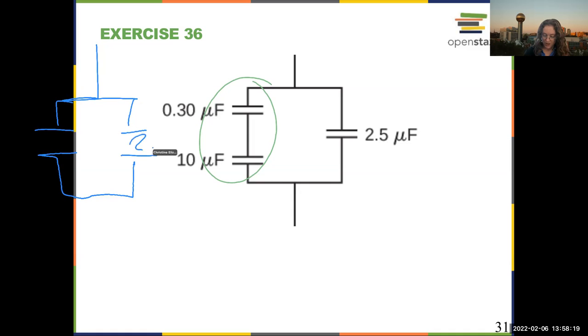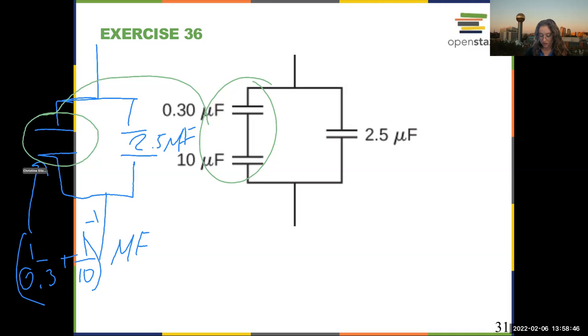Now our 2.5 microfarad capacitor doesn't get touched. But this guy right here, these guys add in inverse. So I have 1 over 0.3 plus 1 over 10, the inverse of all of that in microfarads. And this circuit element has come from those two capacitors.